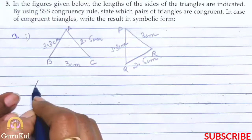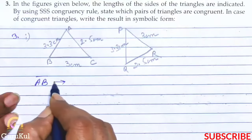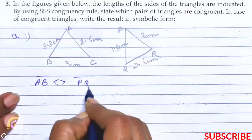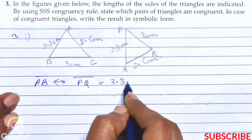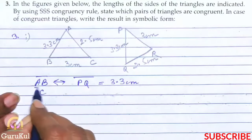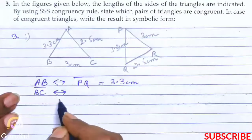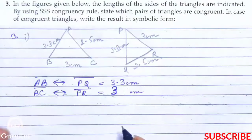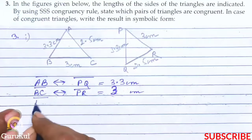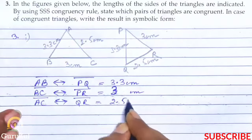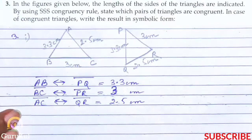So first of all, AB is congruent to PQ which is 3.3 cm. Next, let's take BC. BC is congruent to PR which is equal to 3 cm. Then AC is congruent to QR which is 2.5 cm. So all three sides are equal. So when they are equal, no doubt.